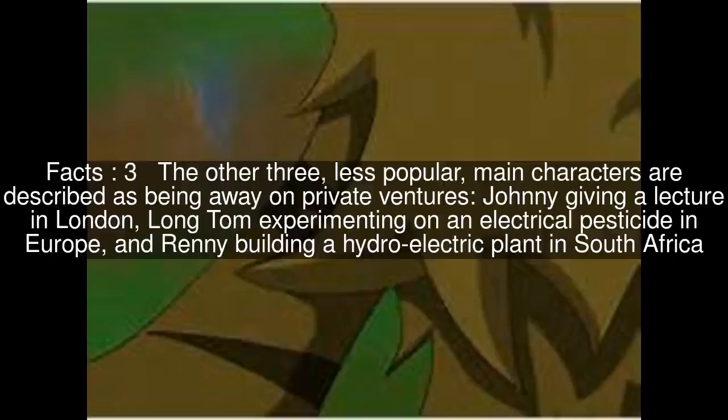The other three, less popular, main characters are described as being away on private ventures: Johnny giving a lecture in London, Long Tom experimenting on an electrical pesticide in Europe, and Rennie building a hydroelectric plant in South Africa.